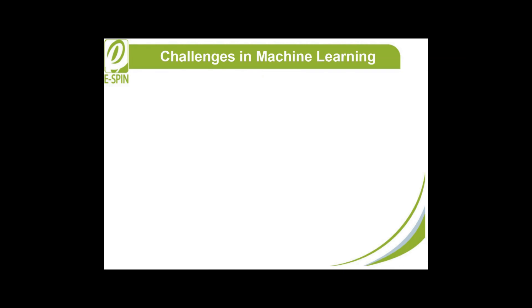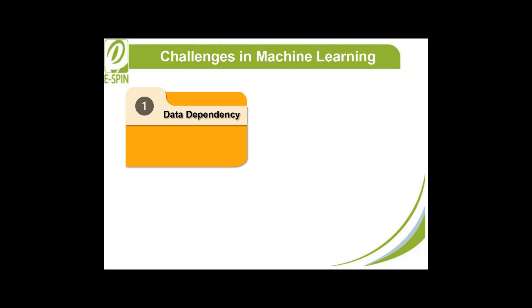Challenges in machine learning range from technical limitations to ethical dilemmas. Data dependency is a cornerstone issue — machine learning requires vast amounts of high-quality data for training. Insufficient, incomplete, or low-quality data can degrade model performance. Collecting and curating large datasets can be challenging, especially in domains like healthcare where data privacy is a concern.